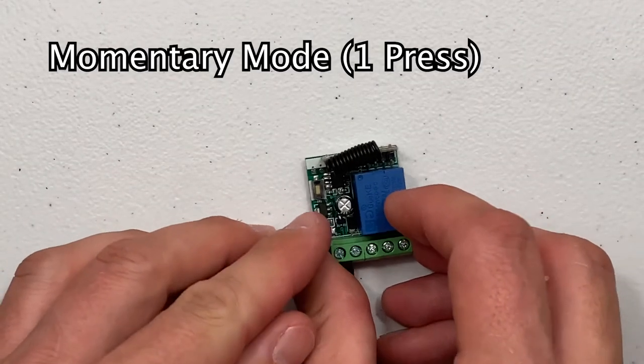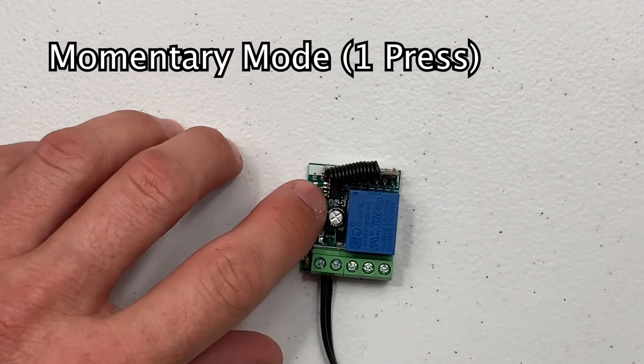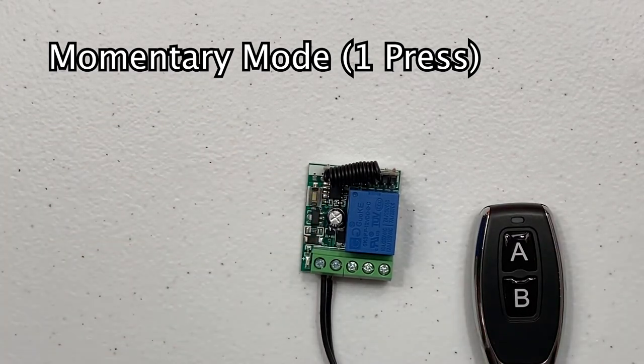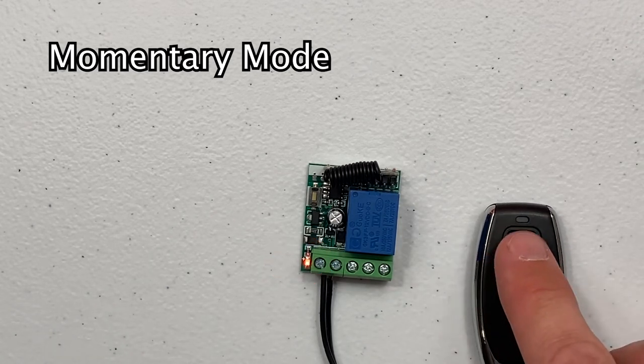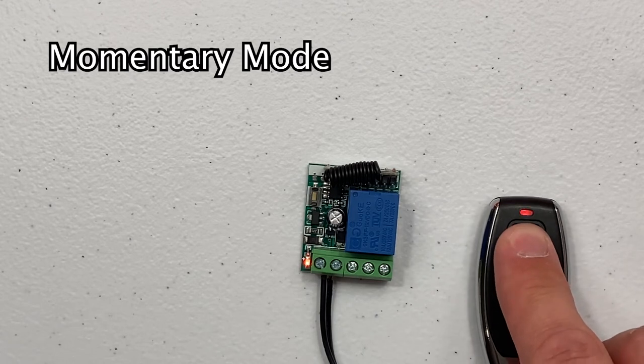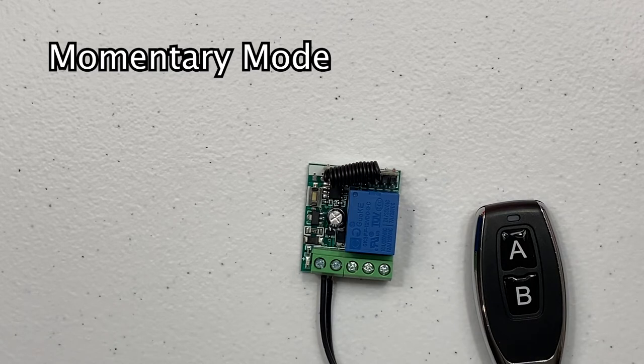Now to set the relay into momentary mode, press the learn button once. The red LED next to the learn button will flash briefly and then remain illuminated while it's waiting for a remote to pair. Within 10 seconds, press the button on the transmitter that you wish to pair to this relay. When the red LED blinks twice, it has been successfully paired.